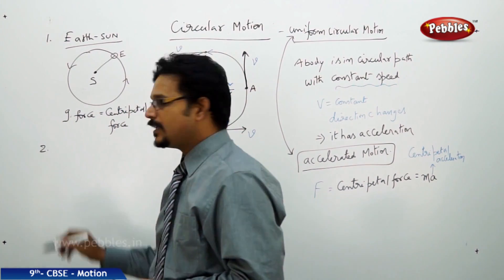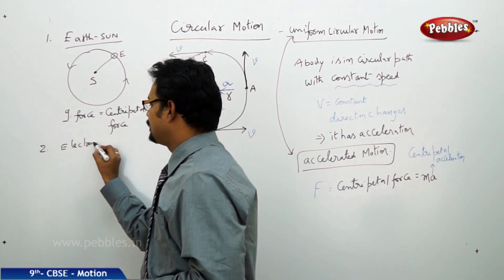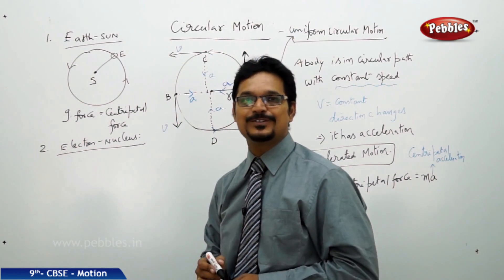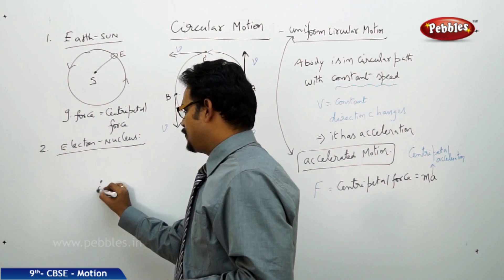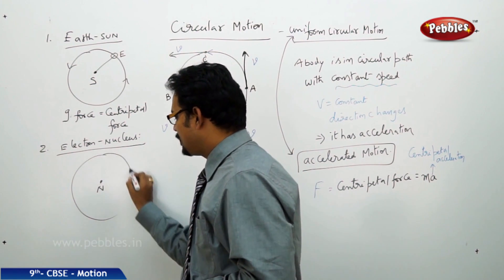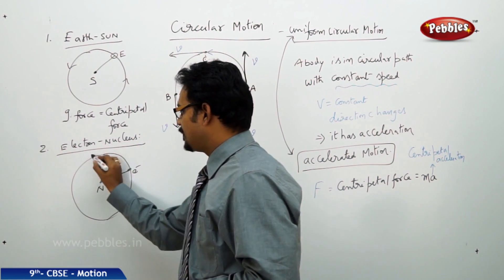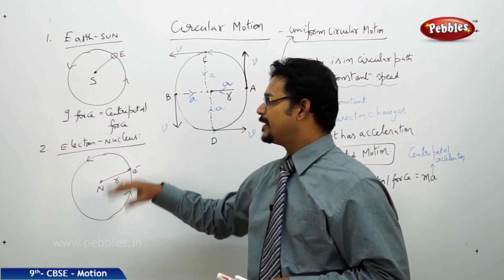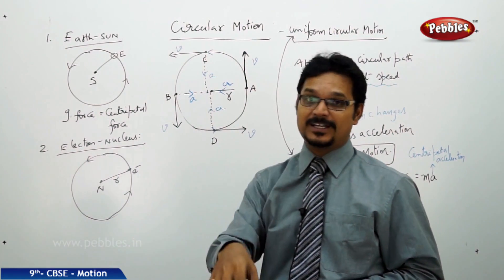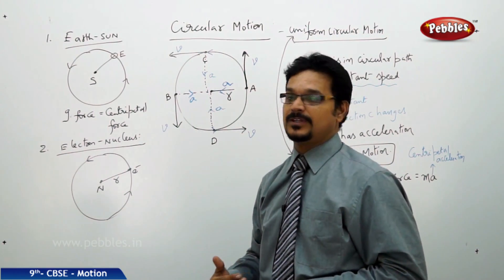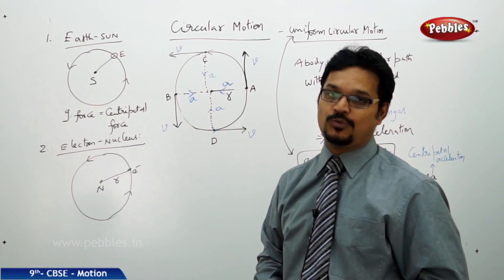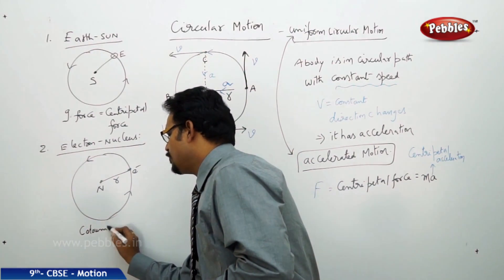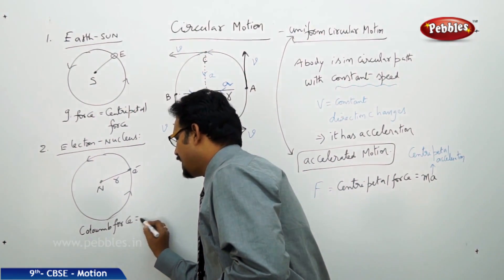The second example is the electron-nucleus system. Go back to your atomic models from your classes — around the nucleus you have an electron revolving around it. This is also circular motion and it is also due to centripetal force. But here the centripetal force is not actually acting directly; some force is acting like centripetal force, and here we say it is Coulomb force — named after the scientist Coulomb. So Coulomb force is acting like centripetal force.